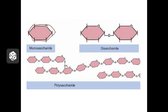Carbohydrates often appear as pentagons or hexagons, especially in an aqueous environment like those found inside cells. Here we have a single ring — that constitutes one monosaccharide, one small monomer. Here are two put together — we call that a disaccharide. And here are a bunch put together into a long chain — we call that a polysaccharide.